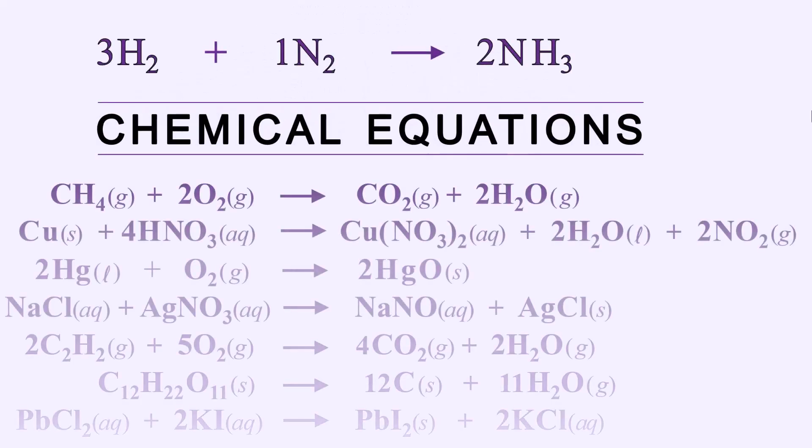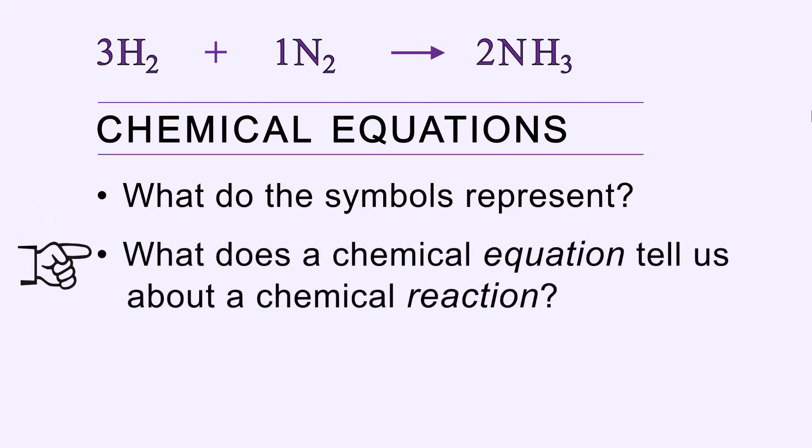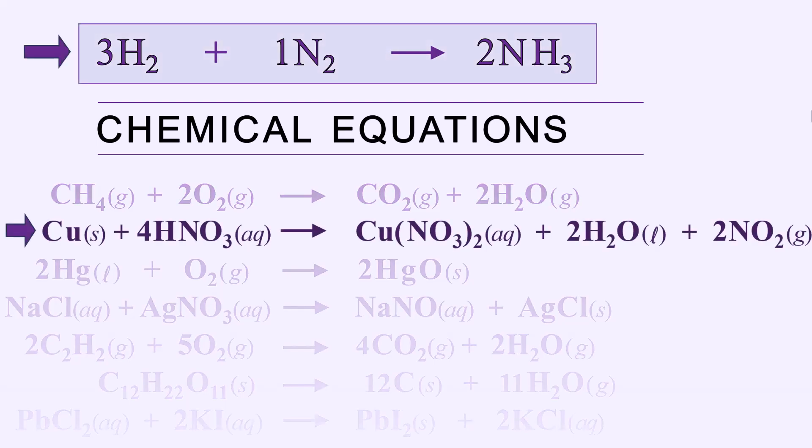Welcome to Chemical Equations in which we will find out what the symbols in an equation represent and what a chemical equation tells us about what is happening in a chemical reaction. There are many types of chemical equations representing many types of chemical reactions. In this video we will look at the symbols in and meaning of two equations, first the more simple one at the top and then the more involved one below.